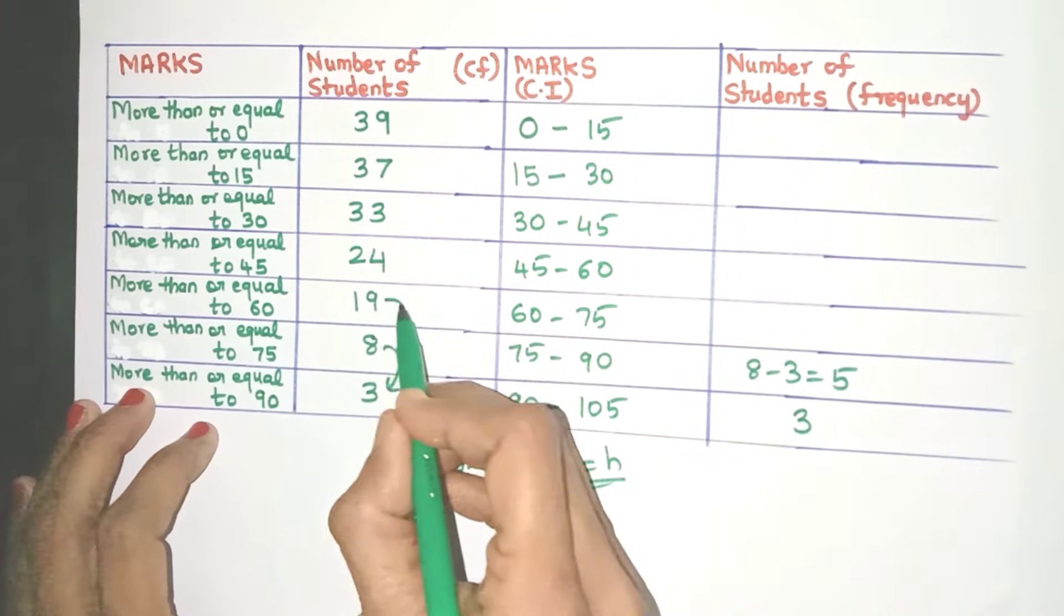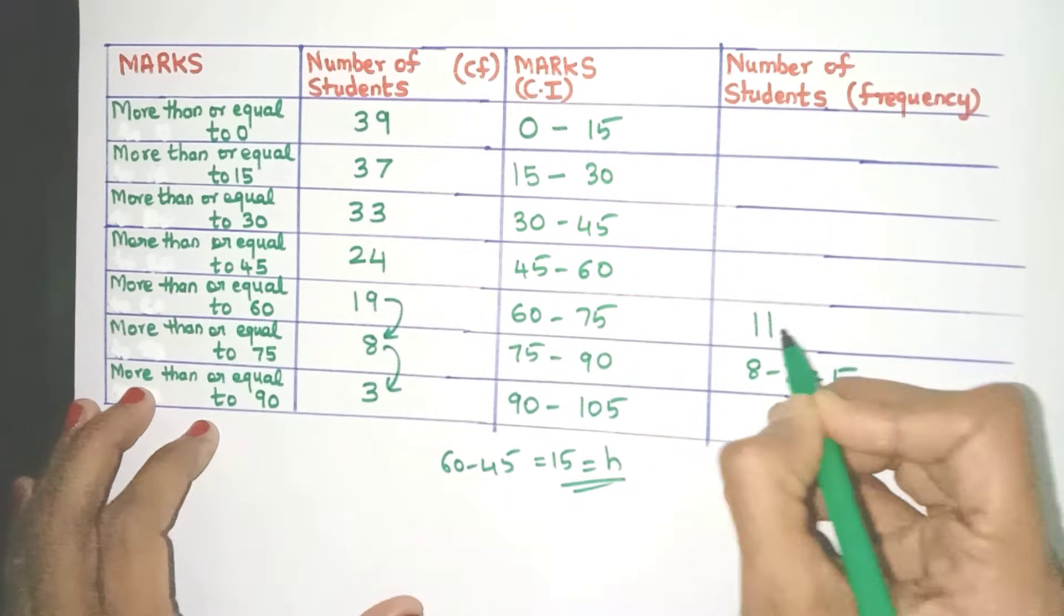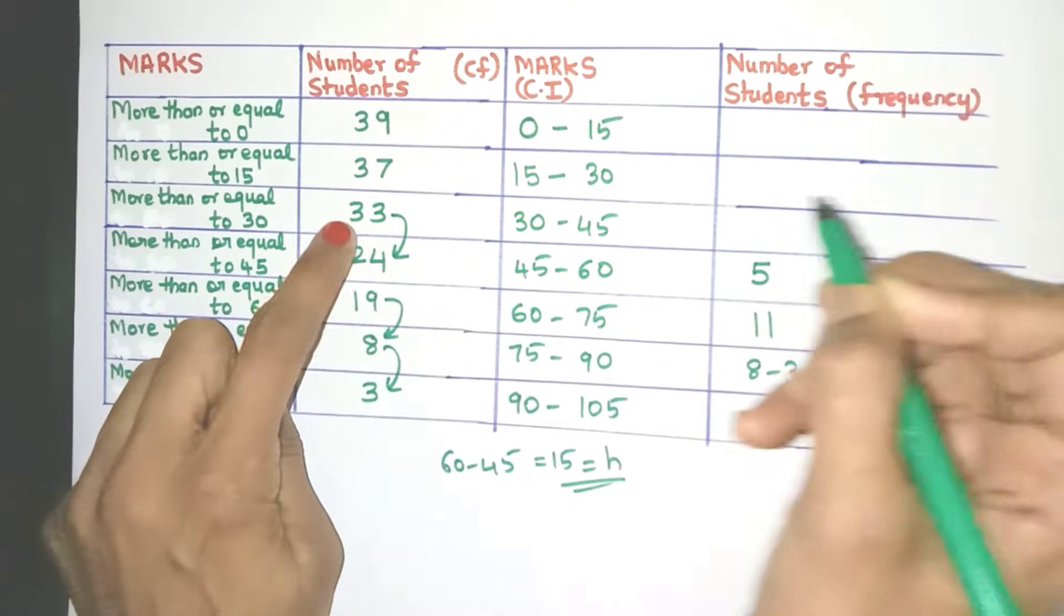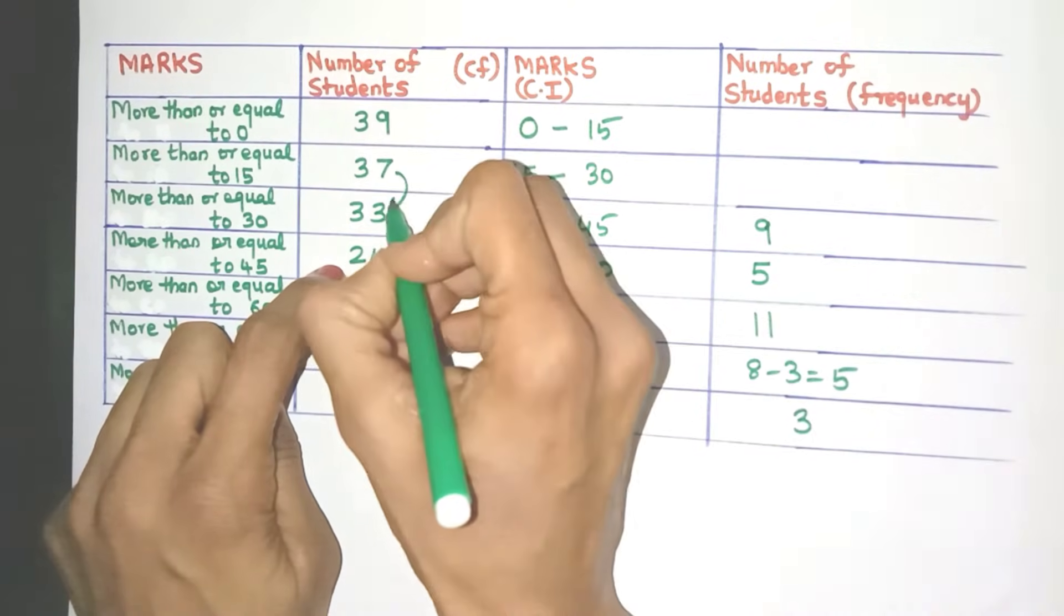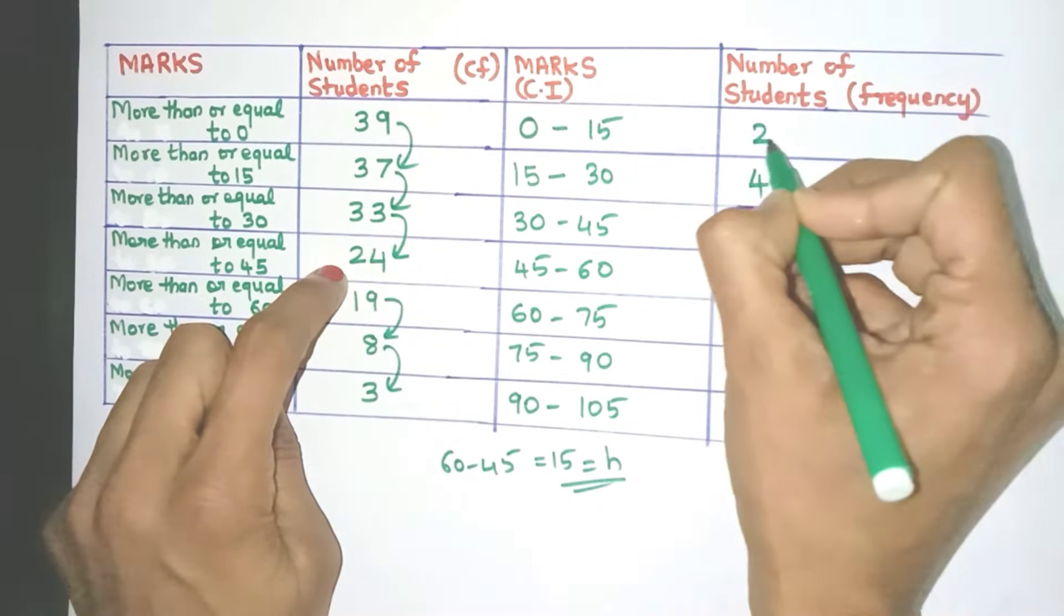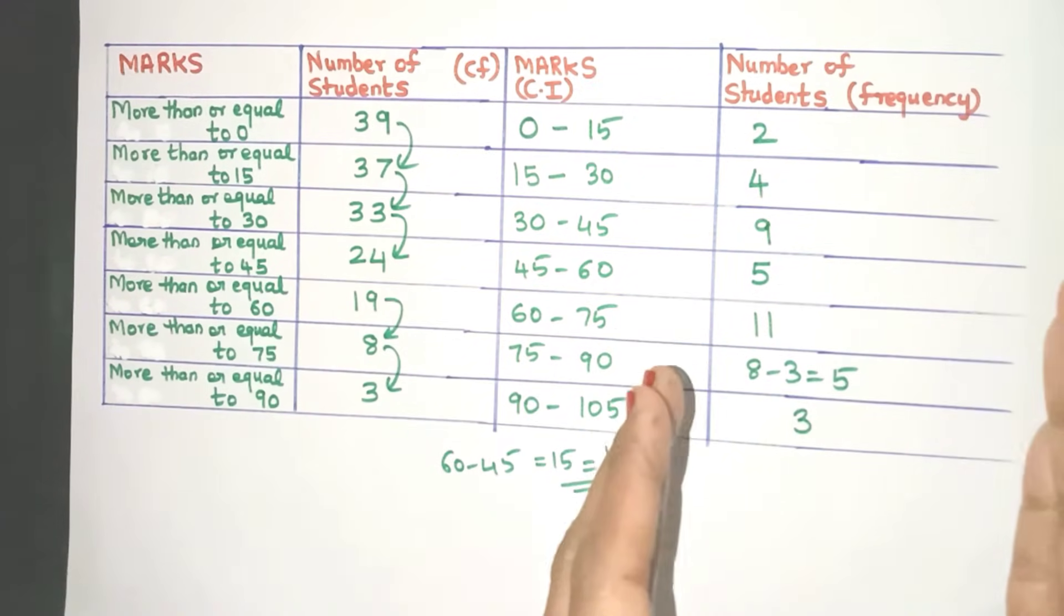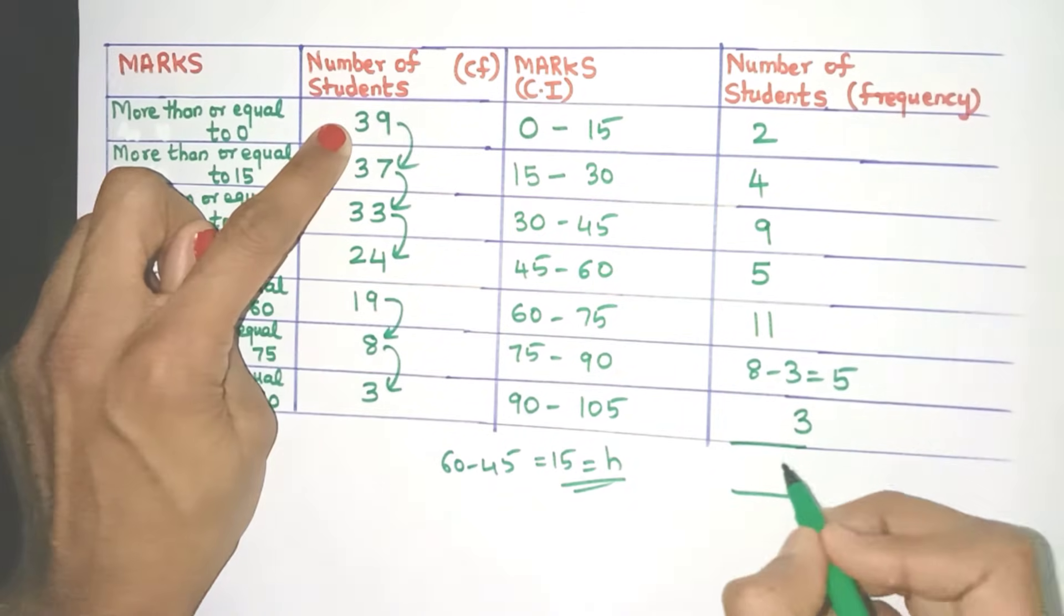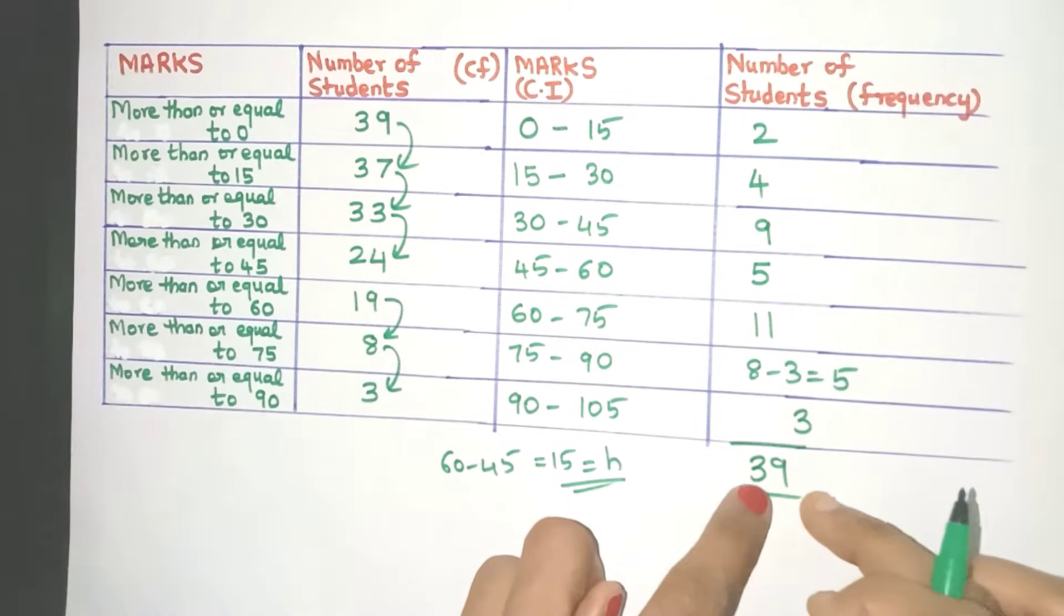So just apply that logic here. 19 minus 8 which is 11. 24 minus 19 which is 5. Here we'll get 33 minus 24, 9. Here we'll get 4 and here I'll get 2. So this way we have got all the frequencies. Again you can verify if your calculations are correct by adding up all the frequencies. So in this case also you're getting the frequency values at 39. So friends I hope you understood how to do this conversion now.